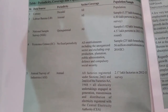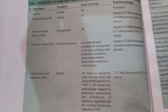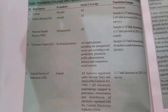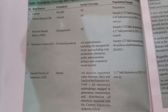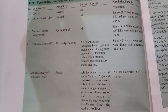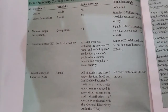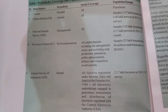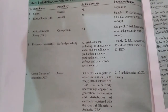The fourth is Economic Census, with no fixed periodicity. Sector coverage is all establishments including the unorganized sector, but excluding crop production, plantation, public administration, defense, and compulsory social security. Sector coverage is important in Economic Census, and a sample is taken here also — 50 lakh households.